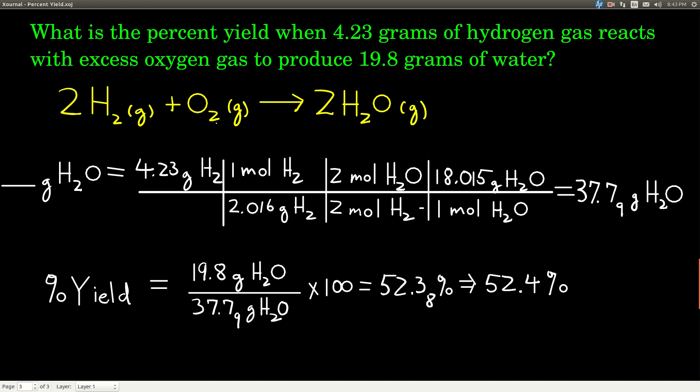So, there's a balanced equation for you. Starting point is 4.23 grams of H₂. What we want to know is how many grams of water we can produce theoretically. It's a dimensional analysis problem. Our starting point is grams of hydrogen, and our conversion factors are going to be the mole ratio between hydrogen and water. And to use that, we're going to need the molar mass of hydrogen.